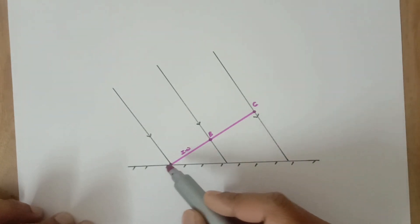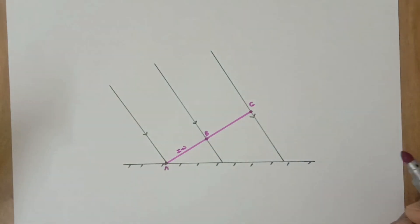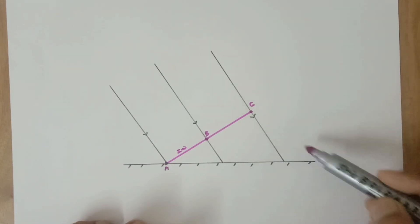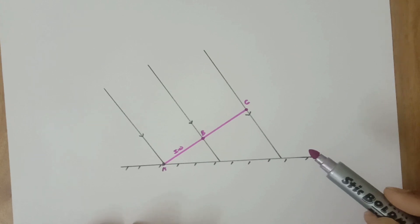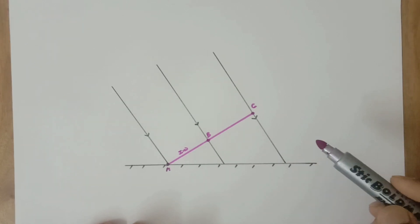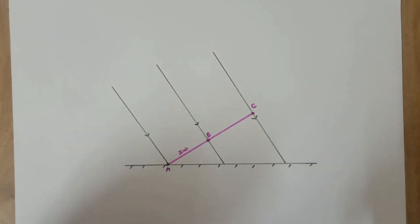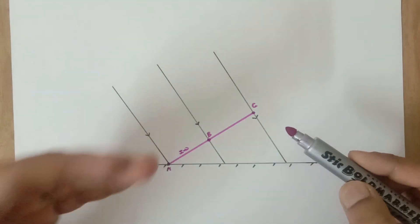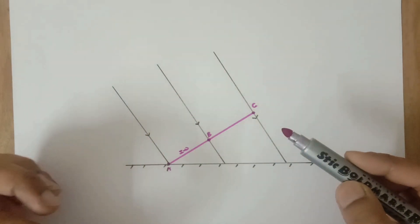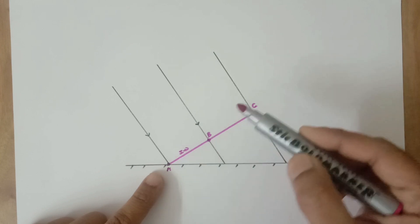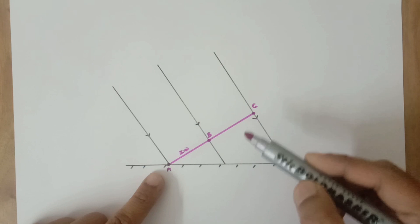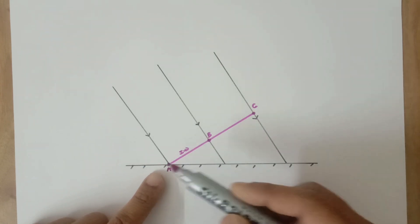All three points on the wavefront behave as secondary sources. They will start emitting spherical waves. After some time those spherical waves will reach the mirror, bounce back, and when we draw a common tangent to all three we will get the reflected wavefront. We will then draw the reflected rays — please understand we are not supposed to simply draw the reflected rays directly; we must obtain them from the construction.